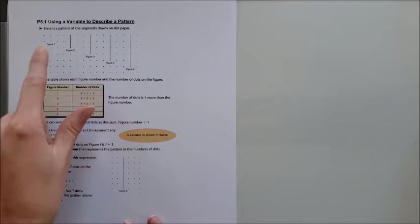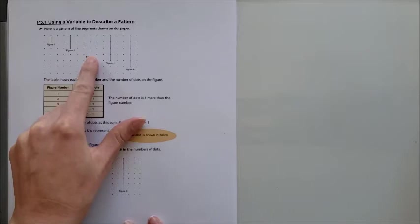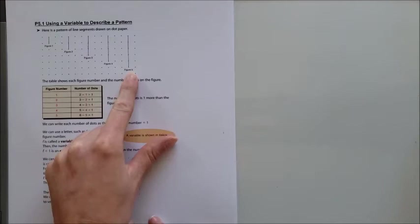Here's a pattern of line segments drawn on dot paper. So I have figure one and it goes down one box, figure two goes down two, figure three goes down three, figure four is gonna go down four, and figure five goes down five.